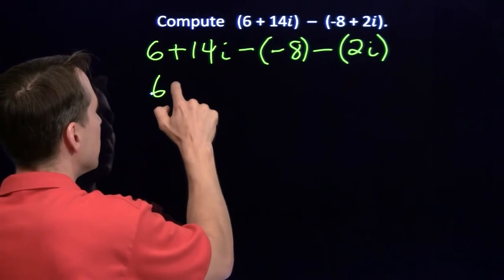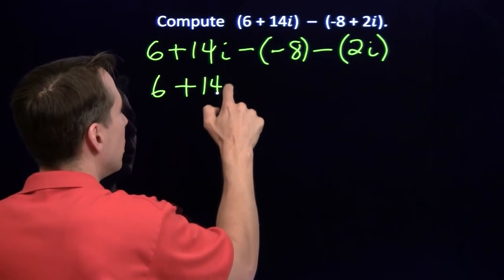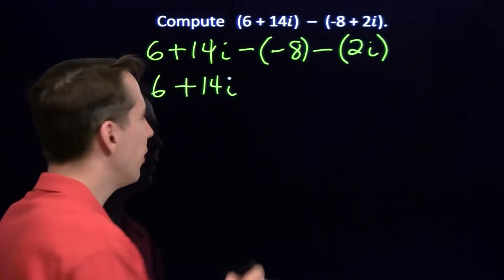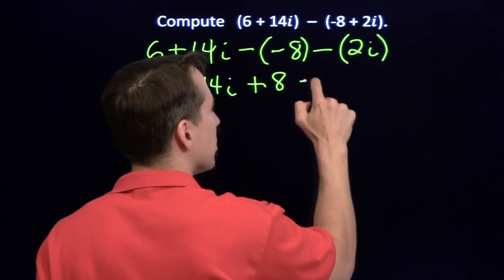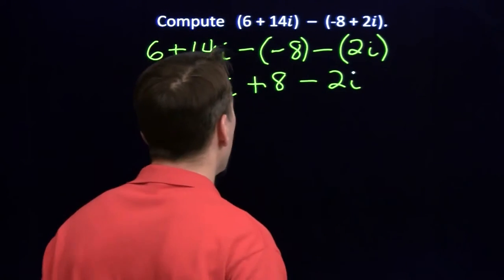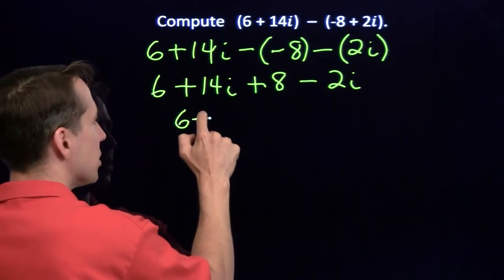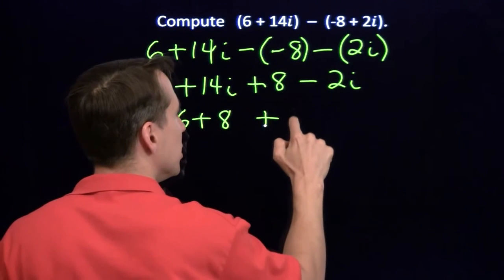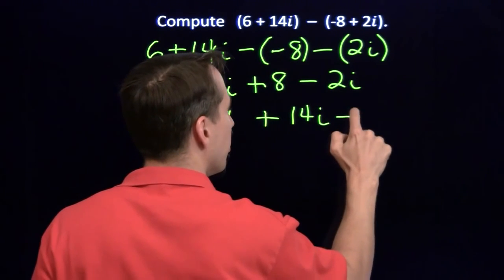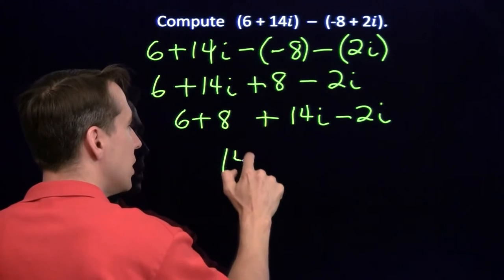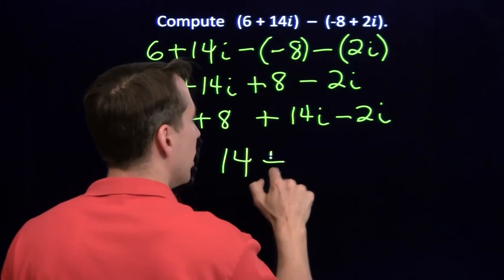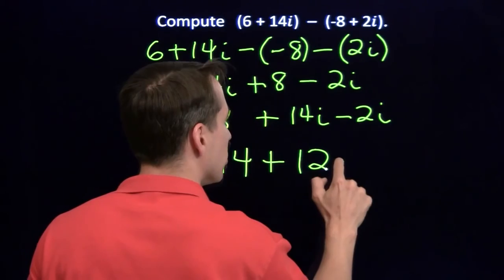And let's see, we have 6. Go ahead and take care of those negatives. Minus a negative 8, that gives us a plus 8. And minus a 2i, that's just a minus 2i. Again, we put together the real pieces, 6 plus 8. Put together the imaginary pieces, plus 14i minus 2i. 6 plus 8 is 14. 14i minus 2i is 12i.